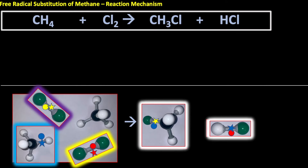The yellow electrons originally in the chlorine-chlorine bond: one ends up in the carbon-chlorine bond and the other remains in a chlorine free radical. For the red electrons in the other chlorine-chlorine bond: one ends up in the HCl bond and the other is unused. The blue electrons from the methane carbon-hydrogen bond: one is in the carbon-chlorine bond and the other is in the chlorine-hydrogen bond. Electrons have come from three different molecules.